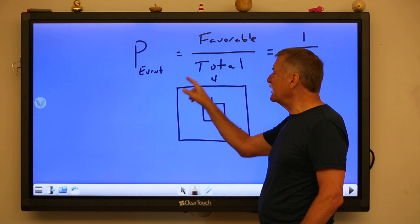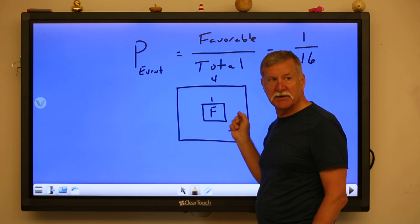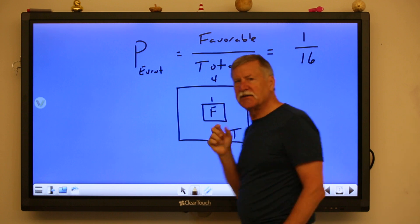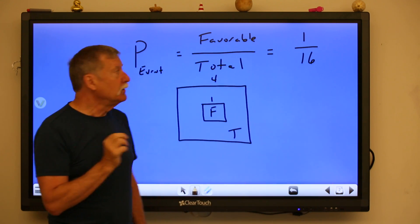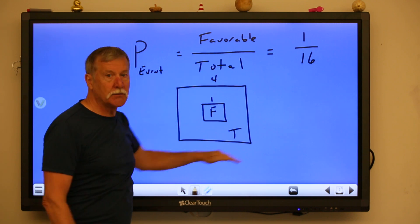In other words we're assuming that you're going to get it inside the big square but once you assume that you can get it inside the big square, what's the chances of hitting the little square? Well again that's comparing favorable, the little square, to total, the big square.